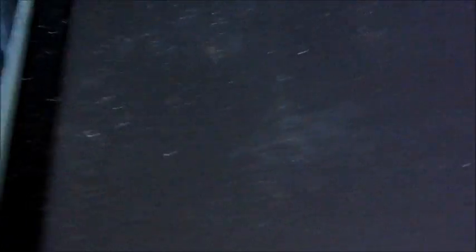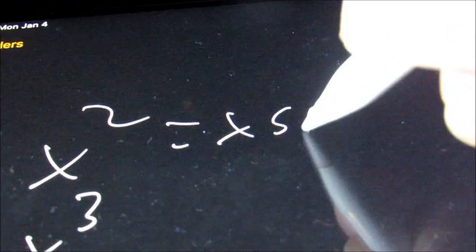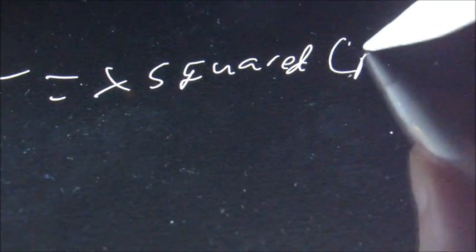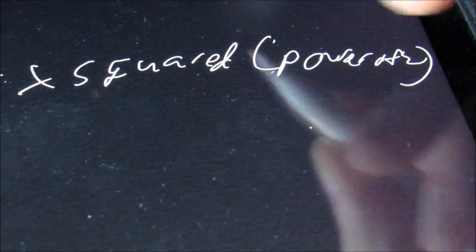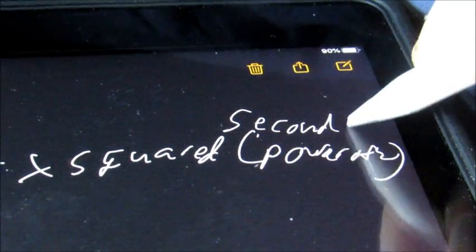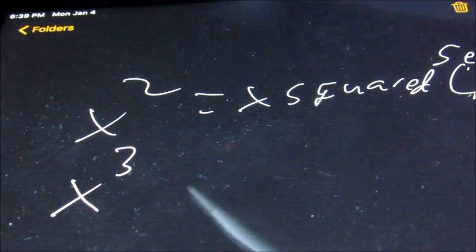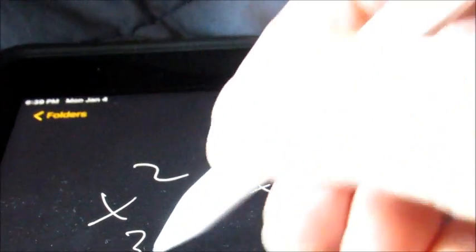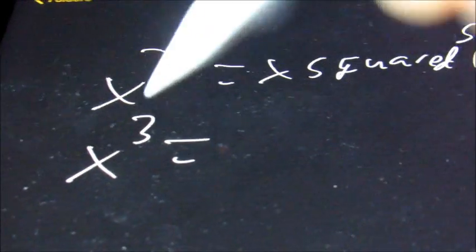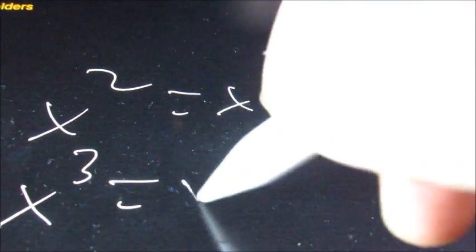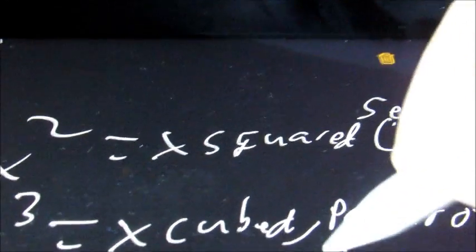Next, we have x squared and x cubed. X squared is the second power, which means you're multiplying x by itself two times — so x times x. X cubed is the third power, meaning x times x times x — you're multiplying whatever's there by itself three times, and the number shown is the exponent.